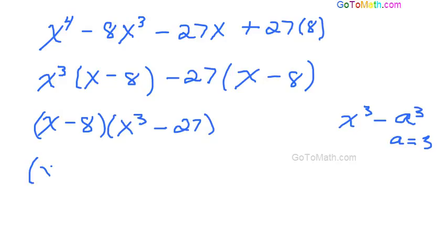So we're going to end up with (x minus 8) times (x minus 3) times (x squared plus 3x plus 9). Remember it's the opposite sign.